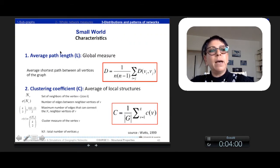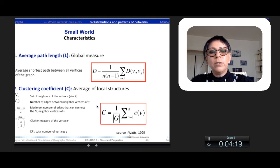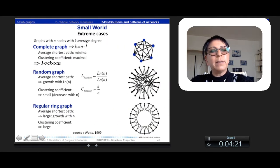And these two conditions can be summarized with two measures, which are the average path length that we saw previously as a global measure. And the clustering coefficient, which is an average of local structure, which is complementary to qualify this kind of networks. So Watson and Strogatz took some extreme cases.